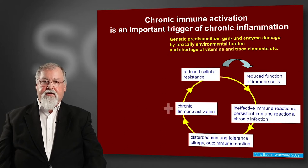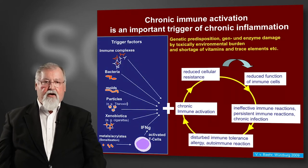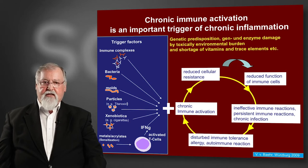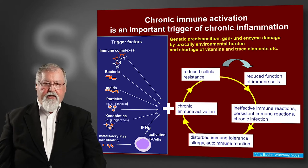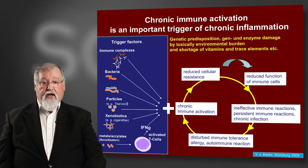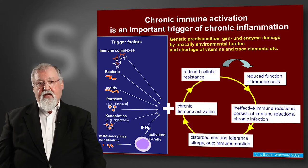This circle is triggered by many factors: immune complexes, bacteria, molds, particles, zirconium, and titanium. Xenobiotics, metals, heavy metals, and acrylates activate T cells and trigger this cycle again and again.